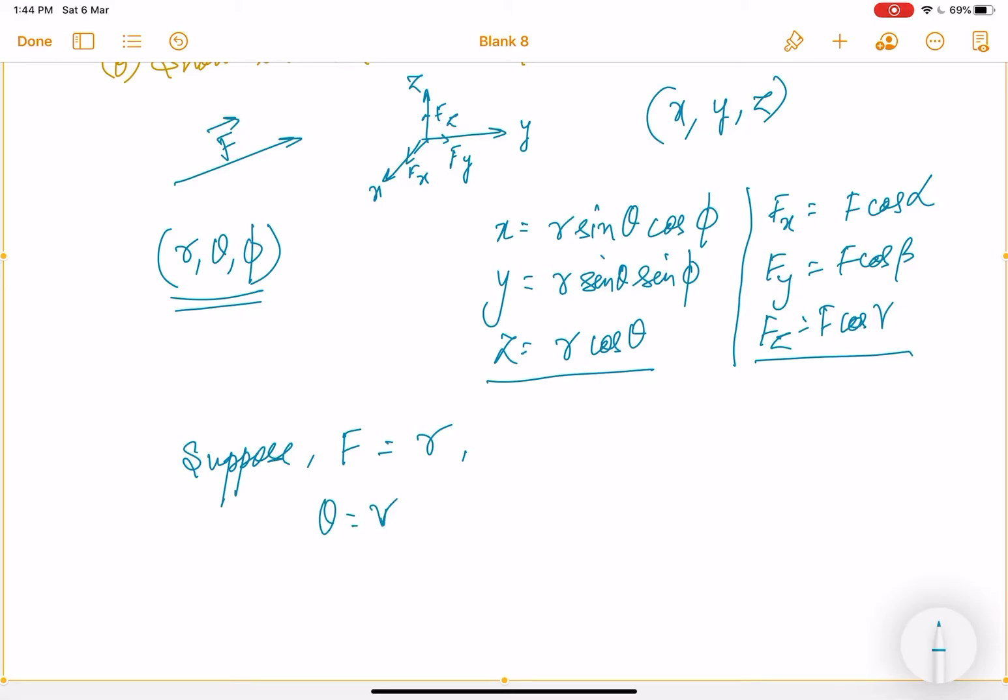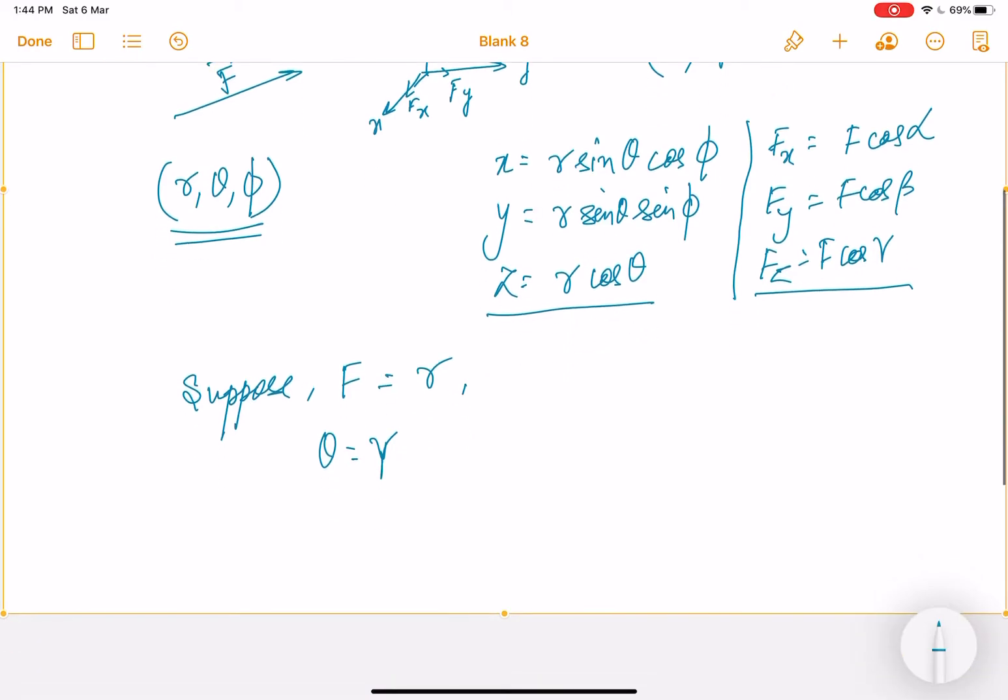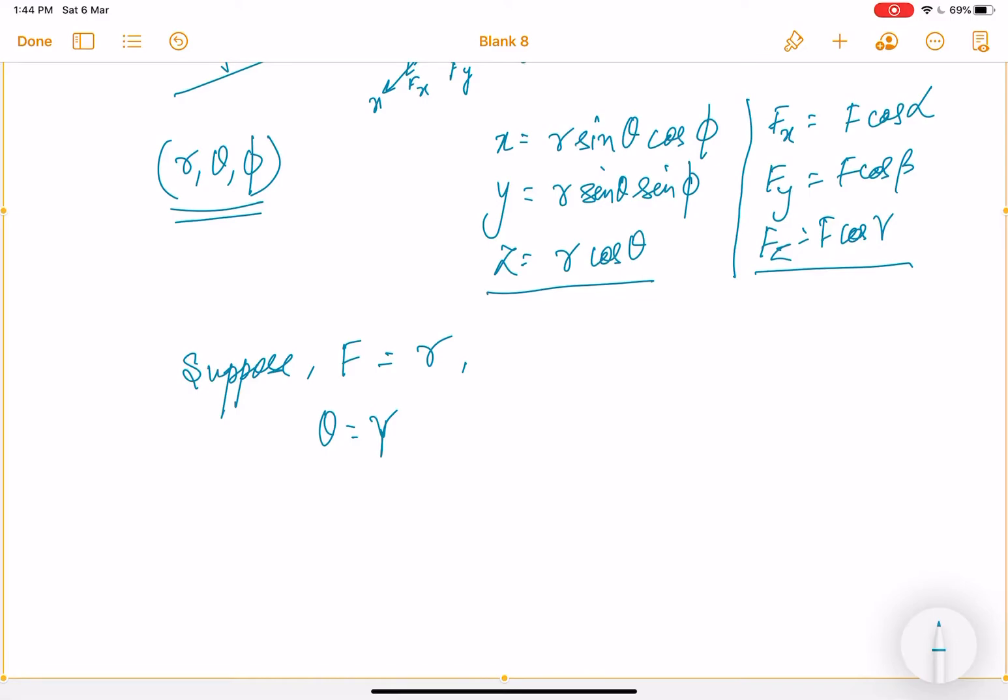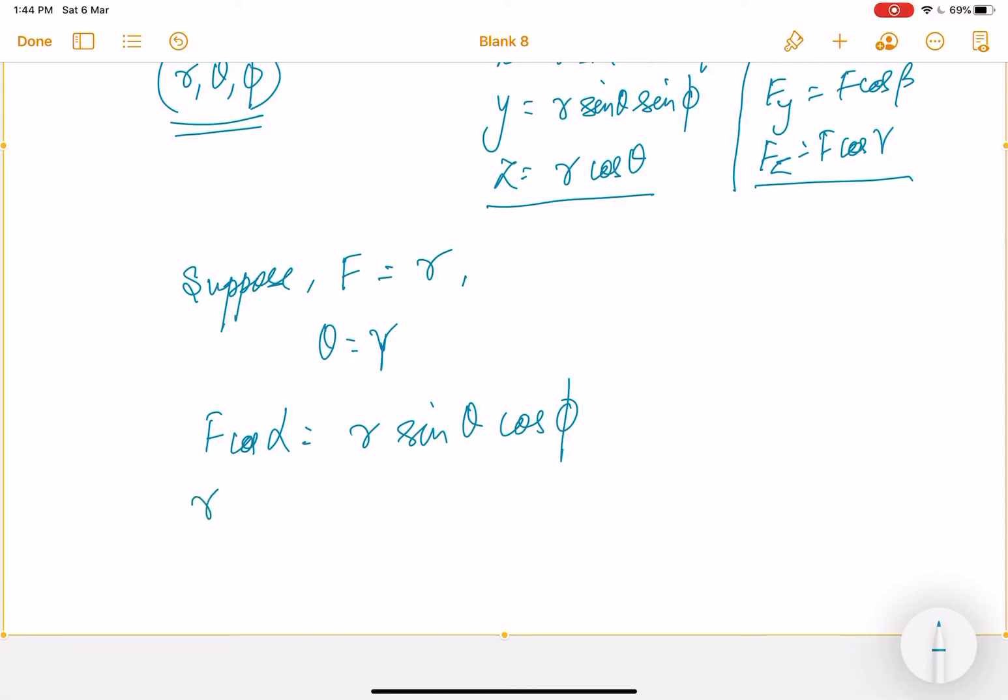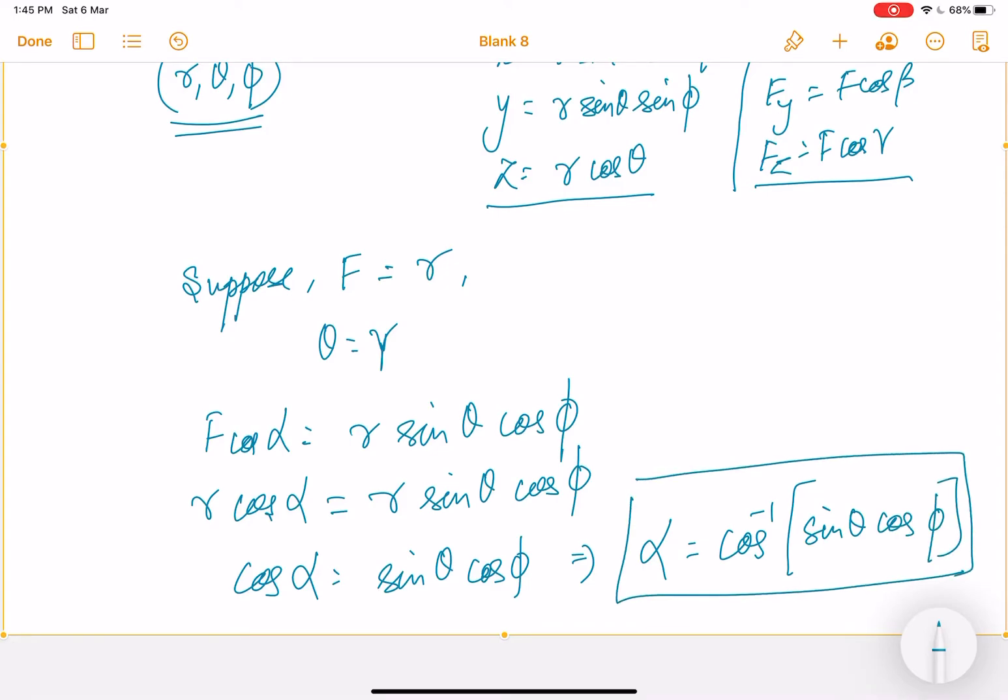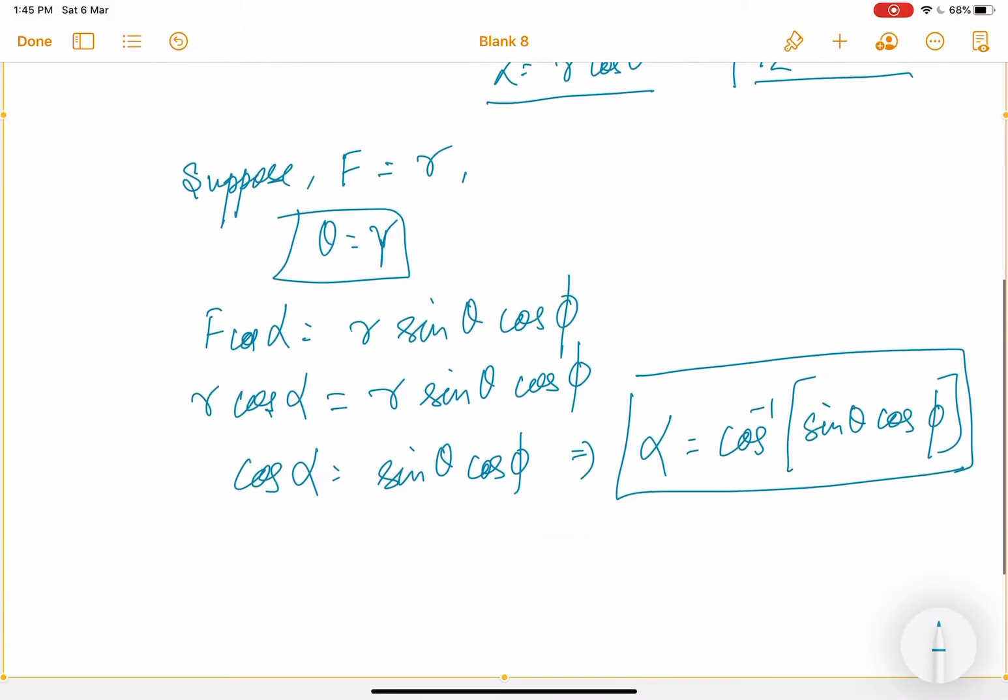Now, going further ahead in this comparison, if I compare the first one, then I will say f cos alpha is equal to r sin theta cos phi. So what is f? We have assumed it to be r, so it will be r cos alpha equals r sin theta cos phi. So what is it that I got: cos alpha equals sin theta cos phi, so I can say alpha is equal to cos inverse sin theta cos phi. This is what I got, and gamma equals theta, firstly I had got.